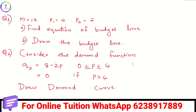The first question gives us: M equals 12, price of good 1 is 4, and price of good 2 is 2.